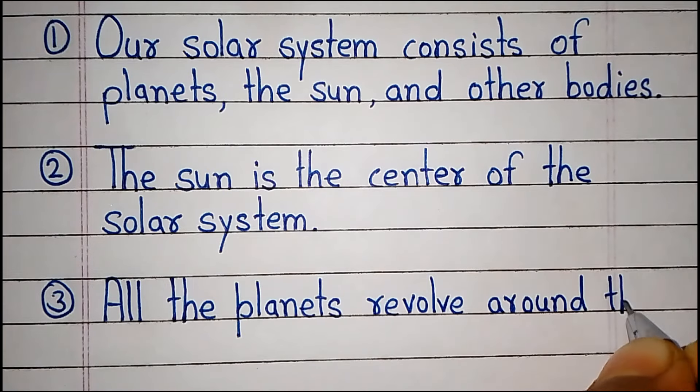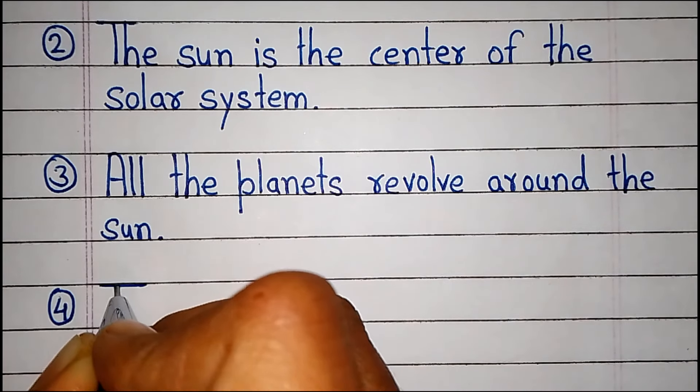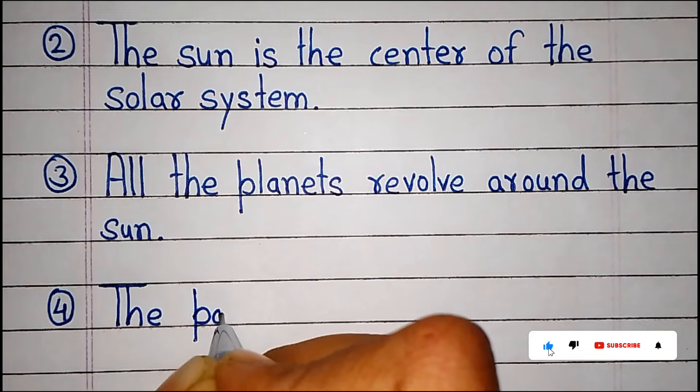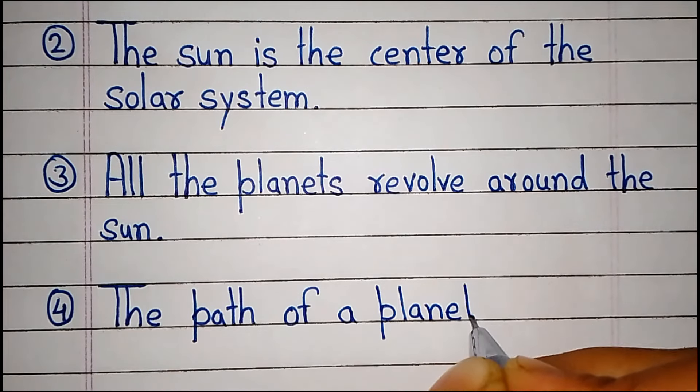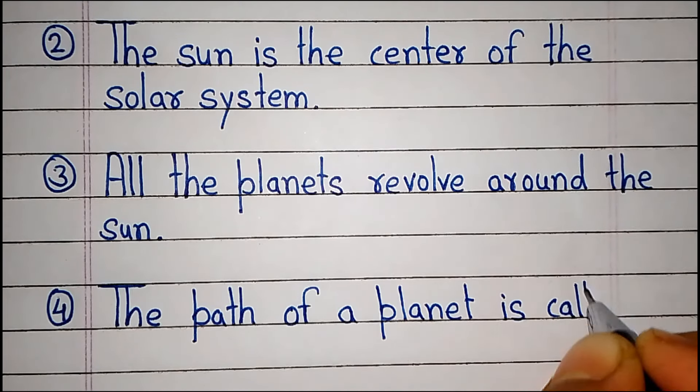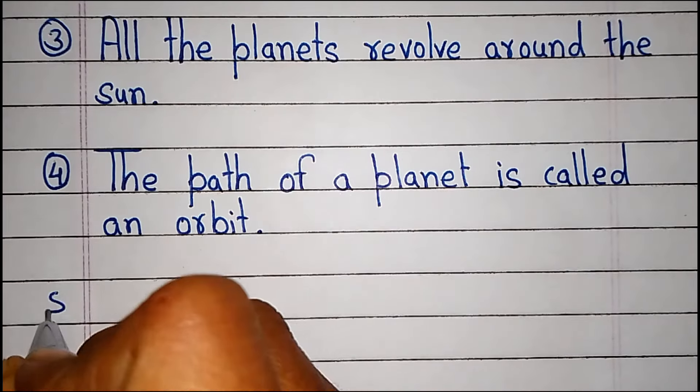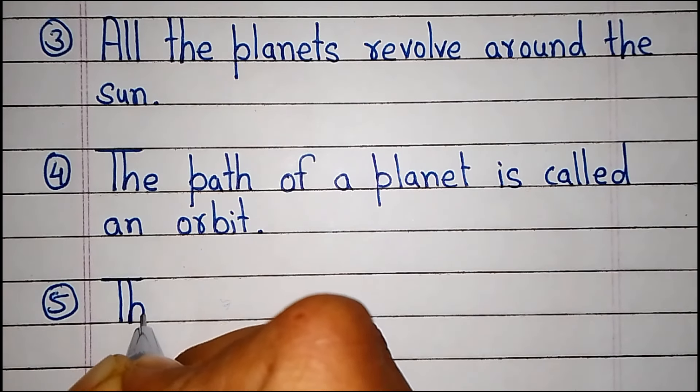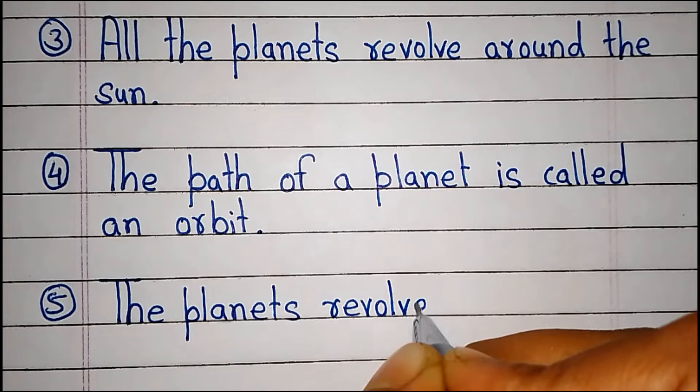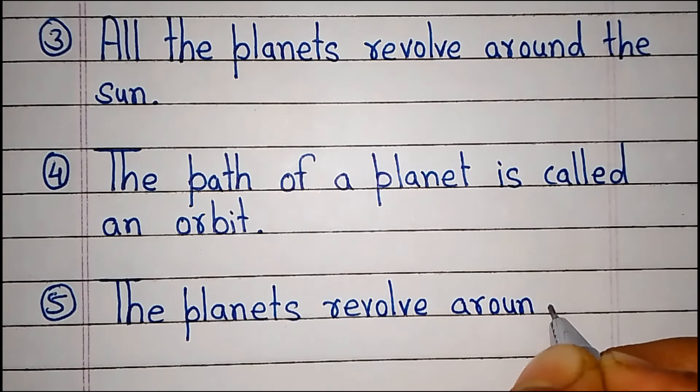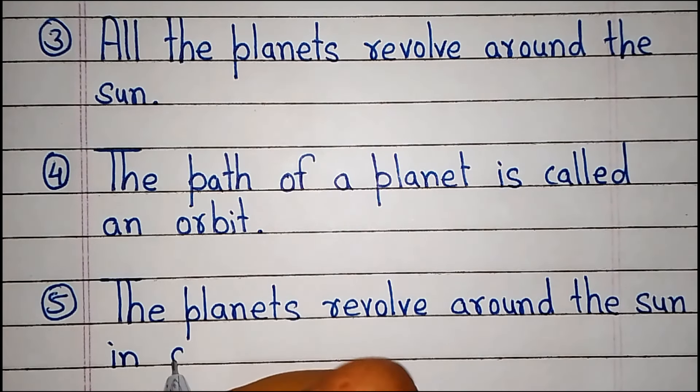All the planets revolve around the sun. The path of a planet is called an orbit. The planets revolve around the sun in an elliptical path.